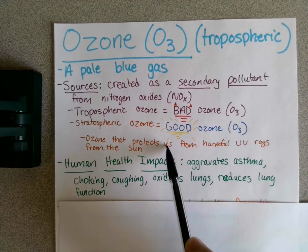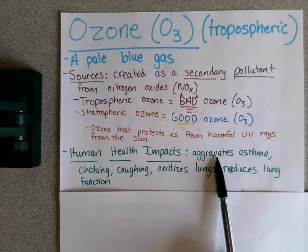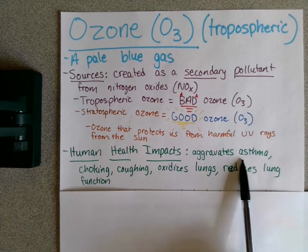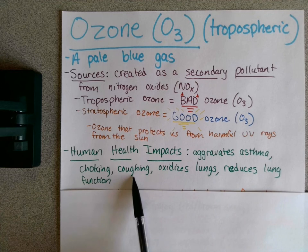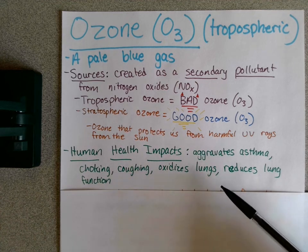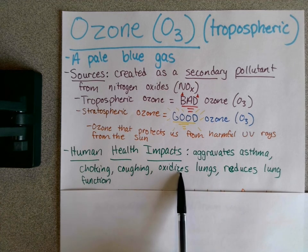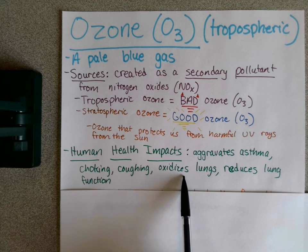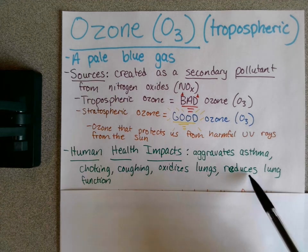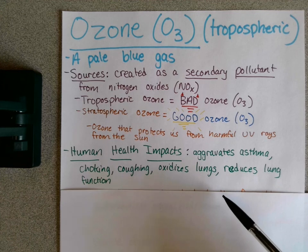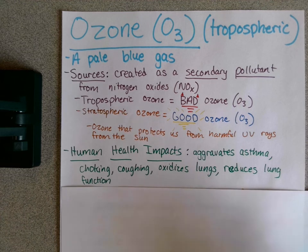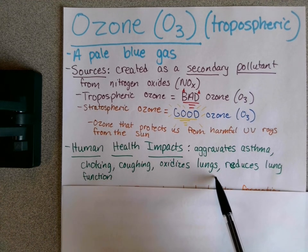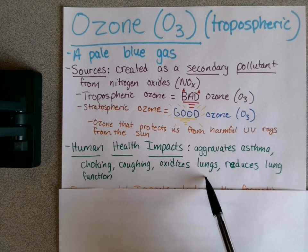For human health impacts, tropospheric ozone aggravates asthmatics and causes choking and coughing. O3 is relatively common to oxidize your lungs — it goes inside your lungs and steals electrons, eventually reducing your lung function. It can also oxidize plants, rubber, and metal. It's a really unstable gas that's basically trying to steal electrons from everywhere.